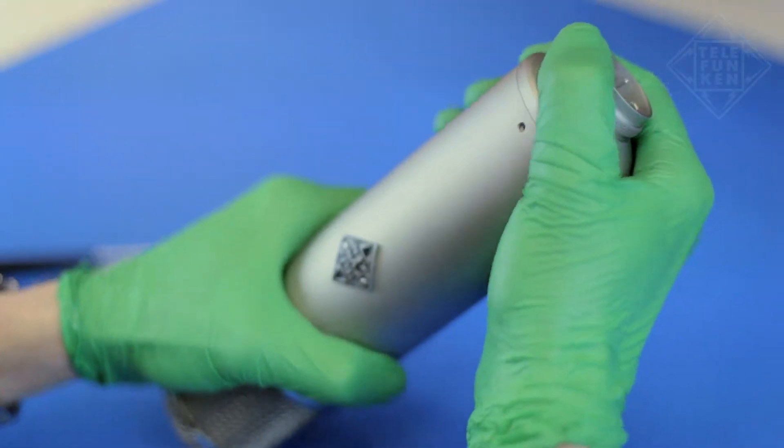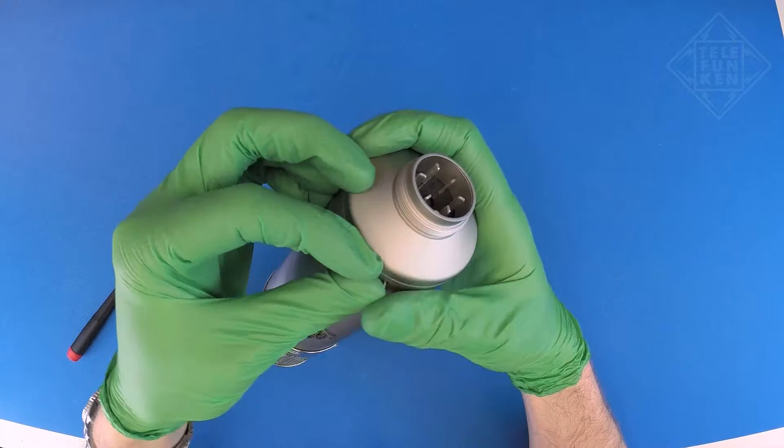Flip the microphone over. Insert and tighten the one screw at the base of the body tube.